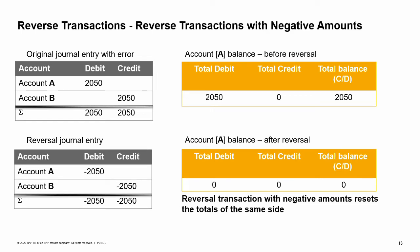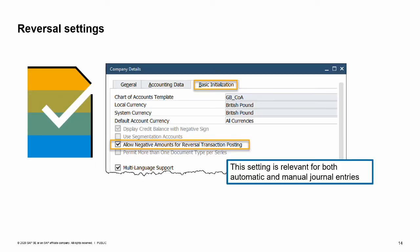The reverse transaction with negative amounts causes the system to post the debit in error as a negative debit, and the credit in error as a negative credit. This not only corrects the balance of the accounts but also the totals, as you can see in the image in the account balance table. It depends on the country whether standard reverse transactions or reverse transactions with negative amounts are required. You can set which type of reversal is used in the company details window in the system initialization menu area of the administration module.